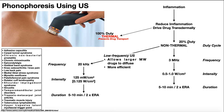That's how we're going to promote phonophoresis — with a 20% duty cycle. The frequency for phonophoresis is going to be 3 megahertz; some machines will automatically be at 3.3, so use 3 or 3.3, whichever you have. The intensity is going to be between 0.5 and 1.0 watts per square centimeter. We typically want to start at the lower value and see what the patient can tolerate, increasing to 1.0 if tolerated. The treatment duration is going to be 5 to 10 minutes.